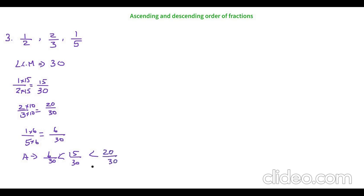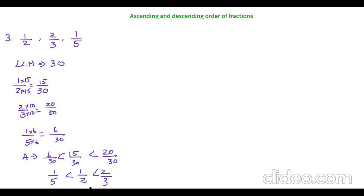Either you can write it like this, or you can write the original numbers: 6 by 30 is 1 by 5, so 1 by 5 is the smallest of all, then 1 by 2, then 2 by 3. The descending order is the vice versa. Whenever we have an unlike fraction, we take the LCM and then find the ascending or descending order.